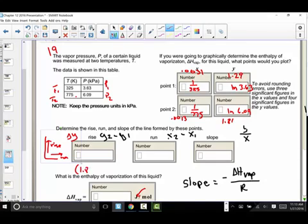So 1.81 minus 1.29, 1.81 minus 1.29 gives me a delta y of 0.52